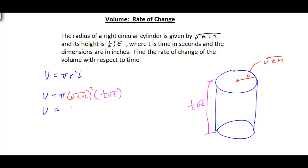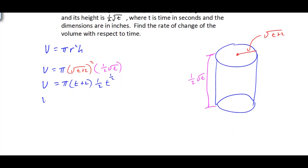If we simplify this, we can bring down the pi, and the square root and the square cancel, leaving simply t plus 2. I'm going to write the square root of t as t to the one half power. Pulling the one half out front gives us one half pi times t to the one half, multiplied by t plus 2.